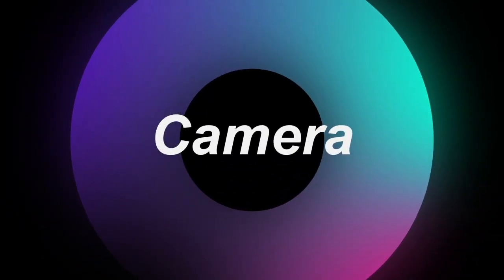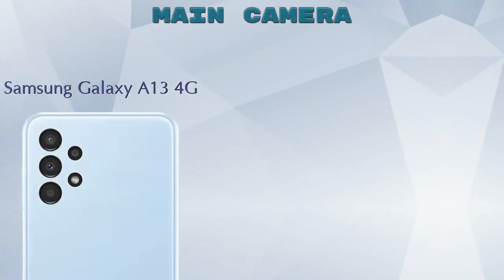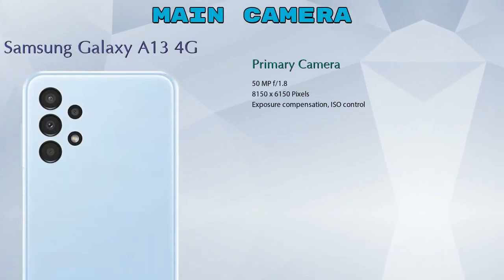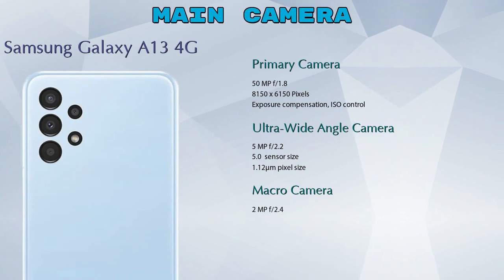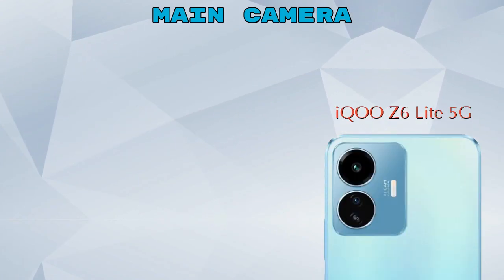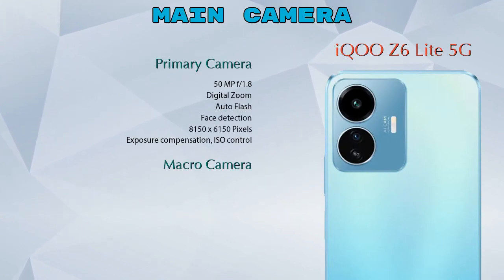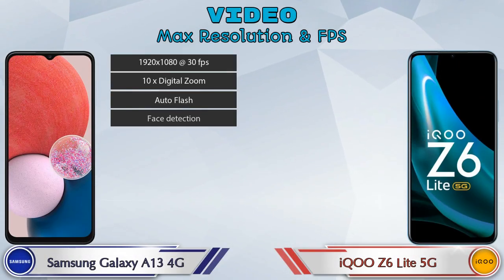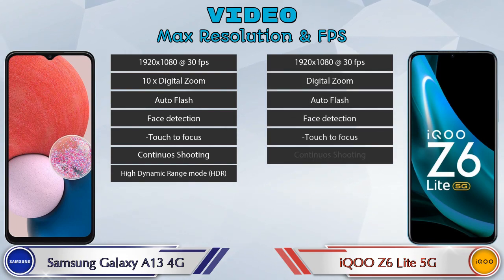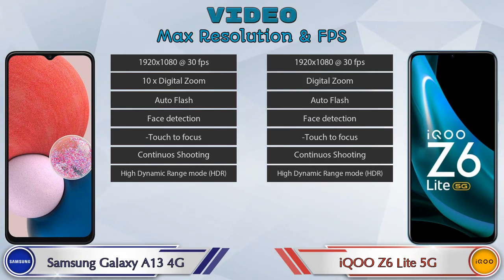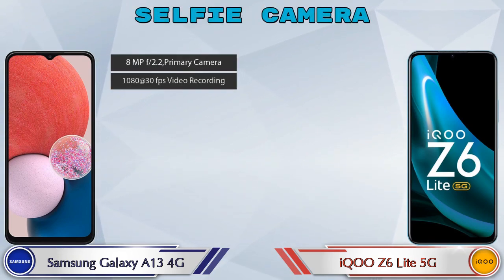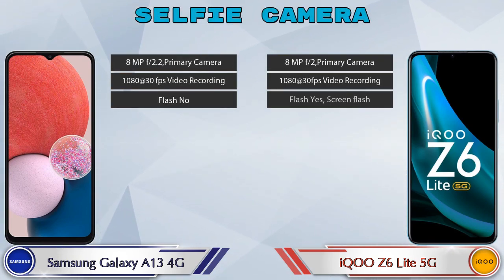Now let's look at the camera. The Galaxy A13 4G has four rear cameras: a primary camera, ultra-wide angle camera, macro camera, and depth camera. The Z6 Lite 5G has two rear cameras: a primary camera and a macro camera. Both phones support seven different video recording features. For the front selfie camera, both phones have a single camera with three available features.